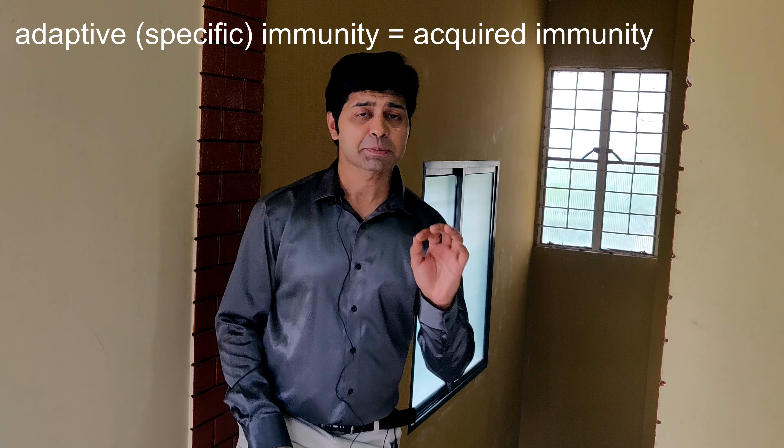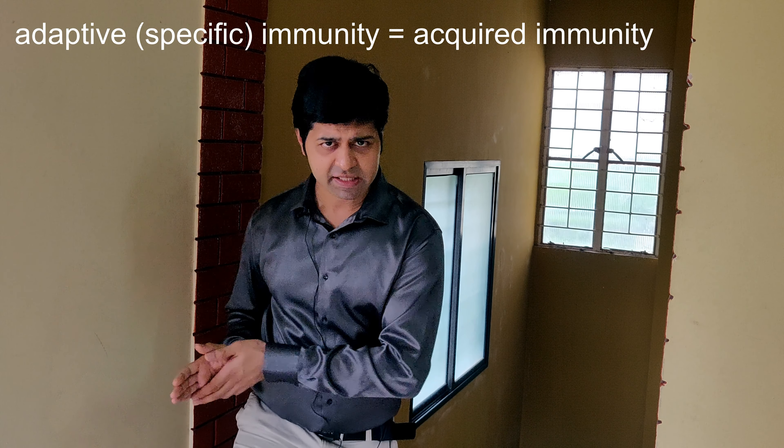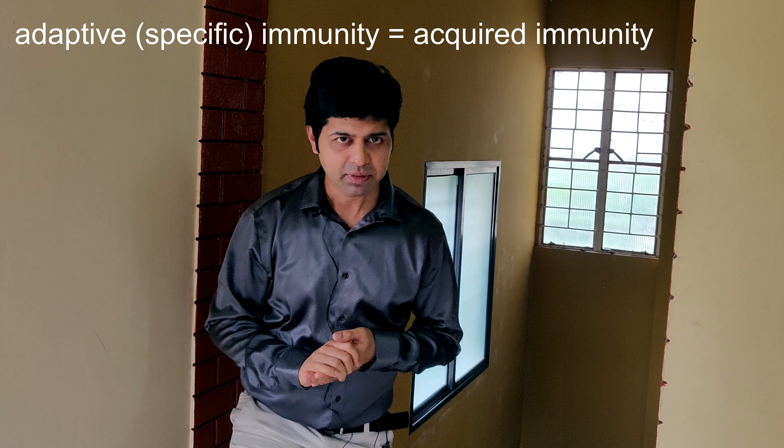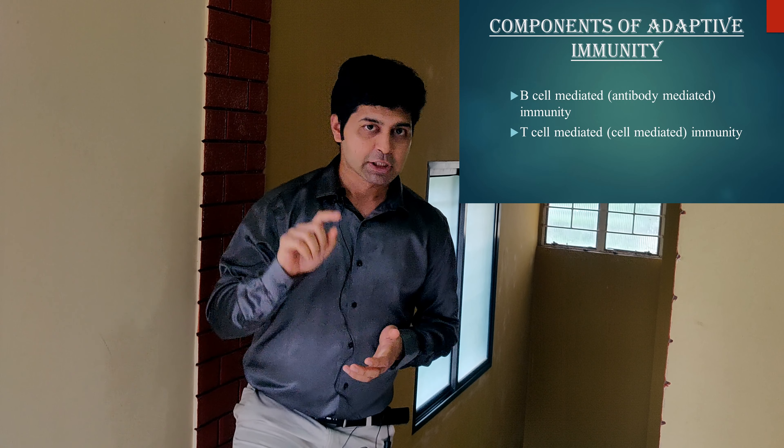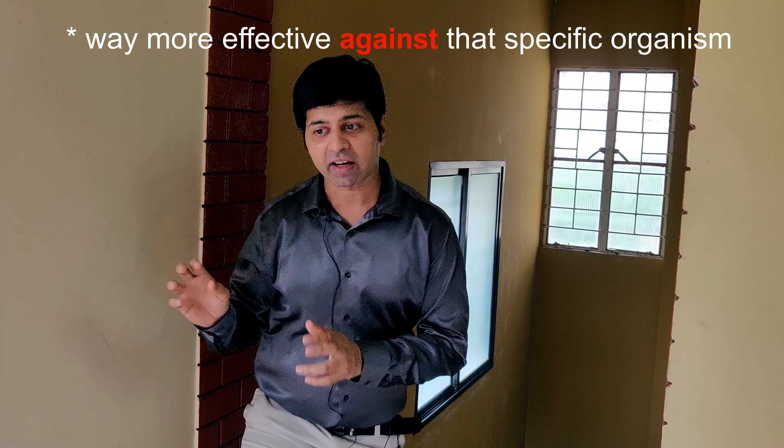Adaptive immunity is a specific immunity. After a certain number of days, the body learns exactly about the attacking organism, makes plans and strategies as to how to tackle it, uses its raw material resources, and forms a very solid defense against that specific organism. So as you can imagine, this adaptive or specific immunity — generated after thorough planning — is way more effective against that specific organism than the innate immunity. And once the body prepares this specific defense system, that is specific antibodies against an attacking organism, it remembers it for life. So the next time the same organism attacks the body again, the body will be ready very quickly to tackle it.